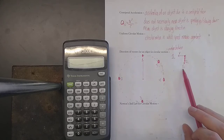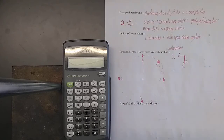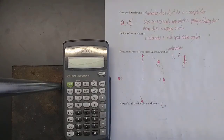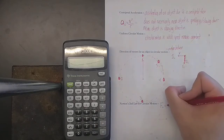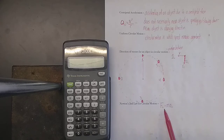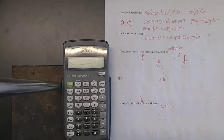Since centripetal force is just a net force, we can write Newton's second law for circular motion as: the centripetal force equals the mass times the centripetal acceleration. It's literally exactly the same thing as F net equals Ma - we just put the little Cs there to remind us we're talking about an object moving in a circle.